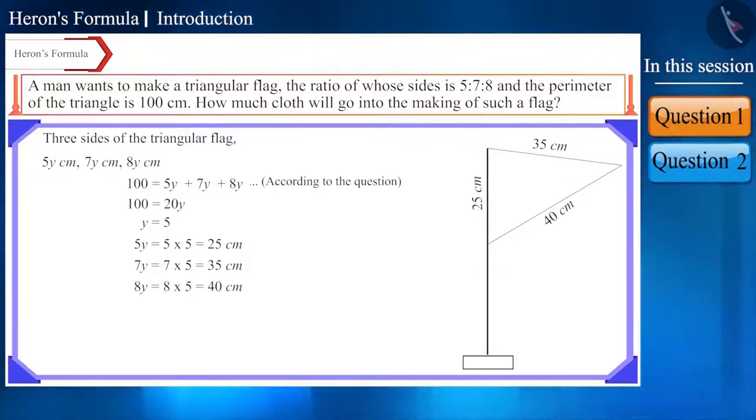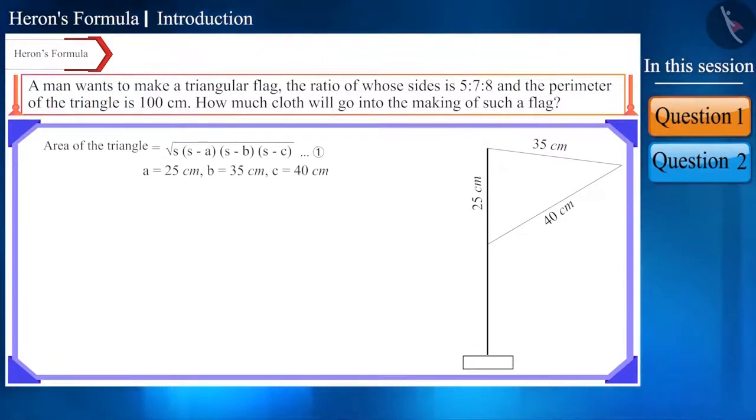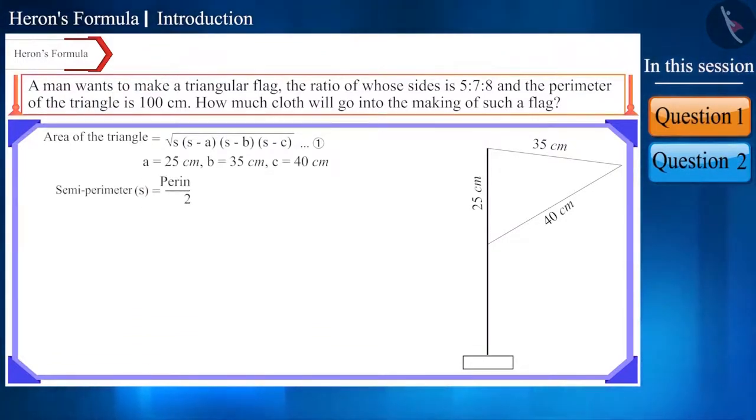As you can see, this is a scalene triangle and we don't know its height. Therefore, to find the area, we cannot use the formula half × base × height. We will use the Heron's formula here. Suppose A is equal to 25 cm, B is equal to 35 cm and C is equal to 40 cm. Let's find the value of the semi-perimeter first, which we will get as 50 cm.